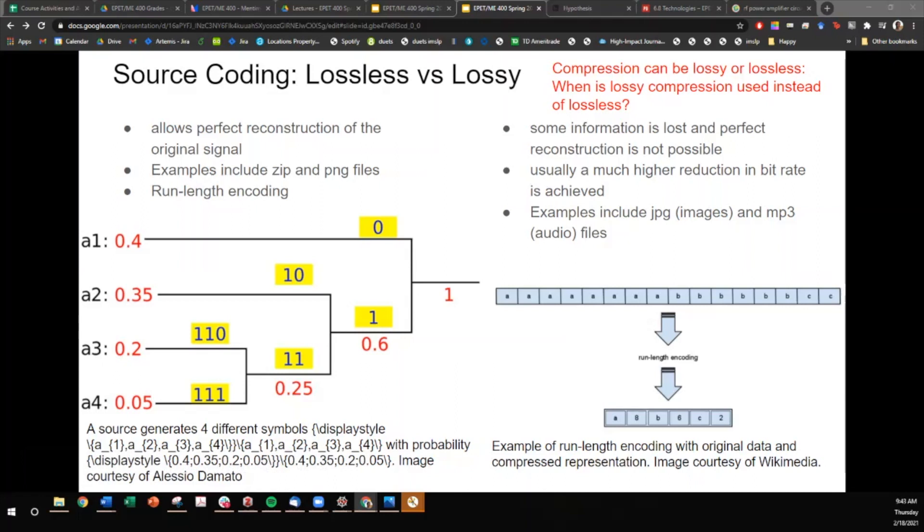This is very useful for data sets where you have long strings of redundant information. For example, if it's a black and white image and there are only a few black spots and a huge amount of white background, you would get a lot of compression or a lot of bang for your buck. When it comes to lossy compression, some information is lost and perfect reconstruction is not possible, but you usually get a much higher reduction in bitrate. Examples include JPEGs and MP3 files.